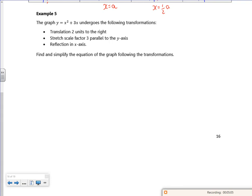So what do we got? So it undergoes, so we start off with x squared plus 3x. So it goes two to the right, so that is f of x minus two, because it's the opposite way round isn't it. So put little brackets around our x's, and I'm replacing.